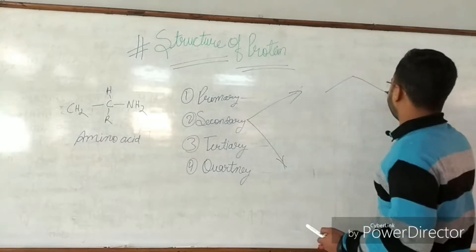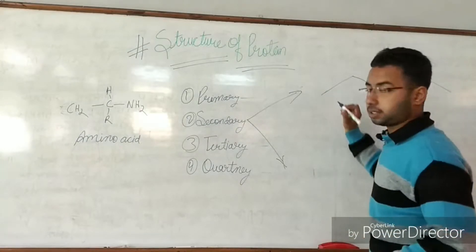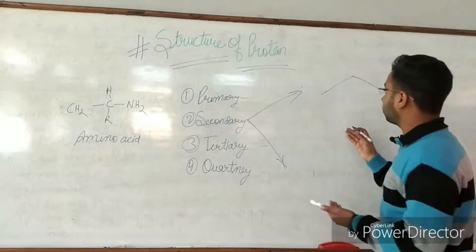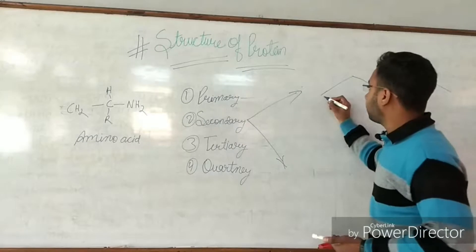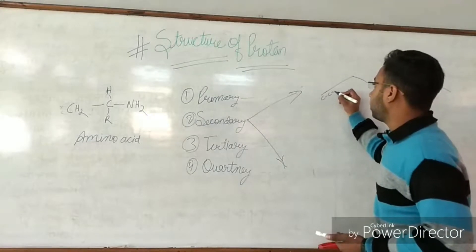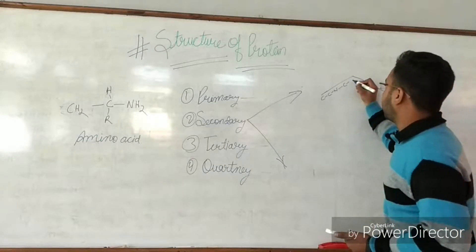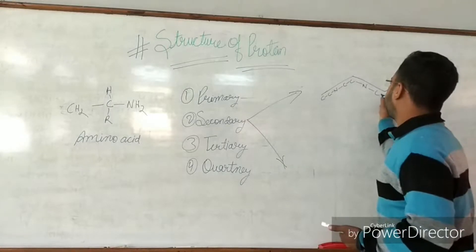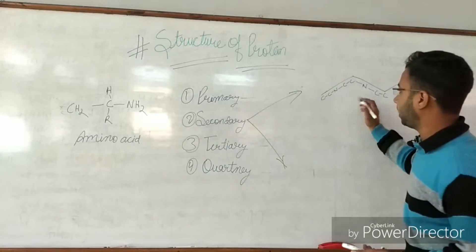Now let's look at the beta sheet structure — this is also helpful in examinations to know how to draw the structure. First, make a backbone sequence: carbon, carbon, nitrogen, then carbon, carbon, nitrogen — two carbons and one nitrogen repeated. This is the basic repeating unit.